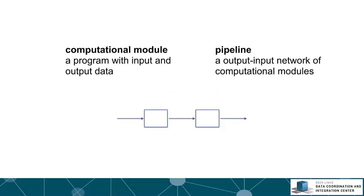What do I mean by computational pipelines? If we start out with a computational module being a program that takes an input, does a computation, and returns some piece of output, then we can define a pipeline as a collection of those computational modules where the outputs and inputs are wired together in a specific arrangement. Shown here on the bottom is the simplest case of such a pipeline, where two computational modules are simply wired together in a sequence.